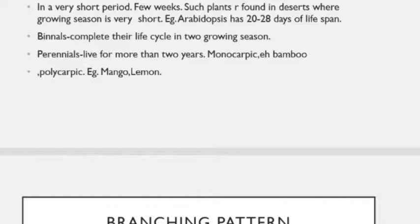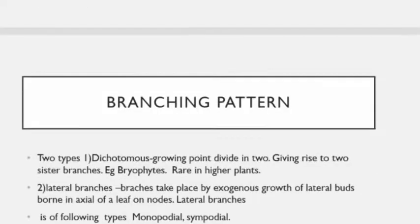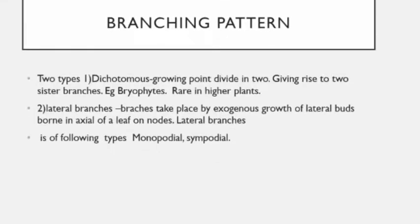Evergreen perennials shed their leaves throughout the year but not at any particular season. They are capable of enduring unfavorable conditions and grow only in areas favorable for their growth. Example is the Ashoka tree.